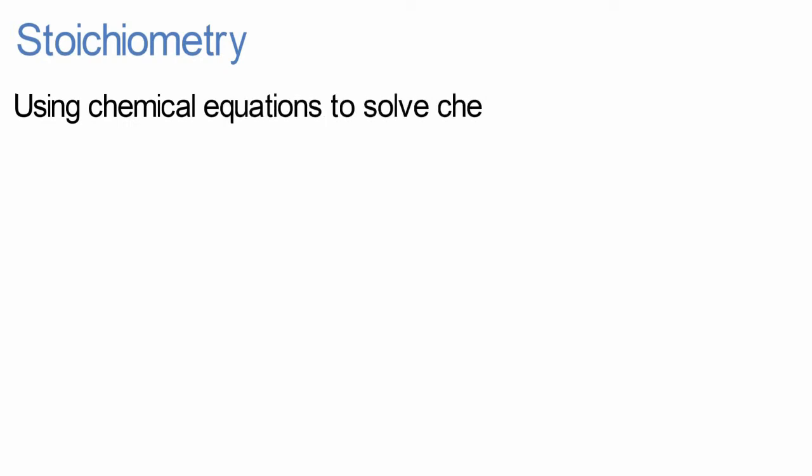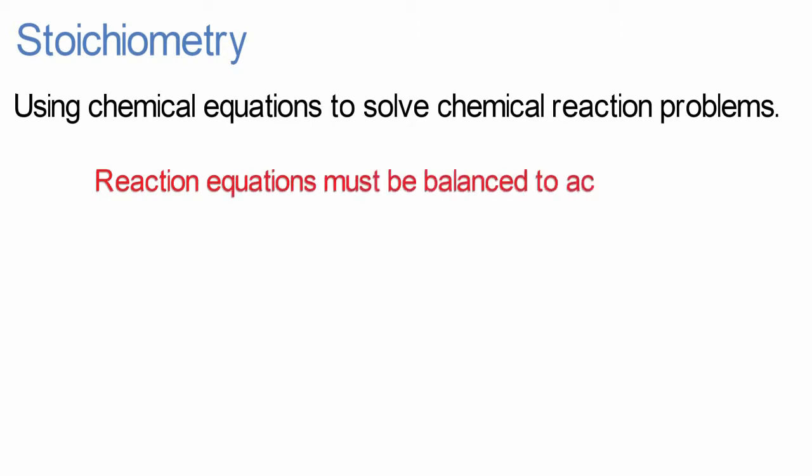We can use this knowledge to determine the amount of products we can expect, or the amount of reactants required in a chemical reaction. Stoichiometry is the term used to describe calculations that relate reaction quantities. The most important step in chemical reaction calculations is balancing the chemical reaction equation.